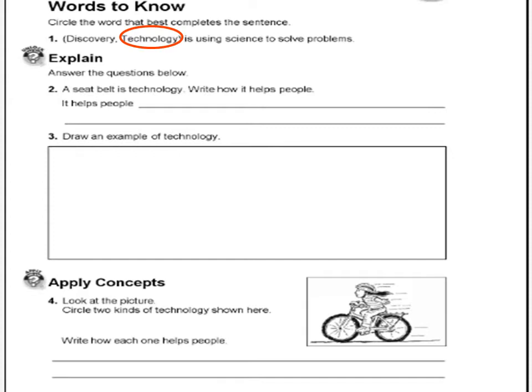Explain. Answer the questions below. A seat belt is technology — write how it helps people. It helps people stay safe in the car.